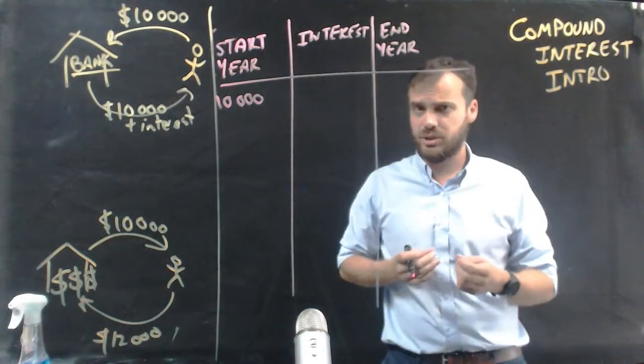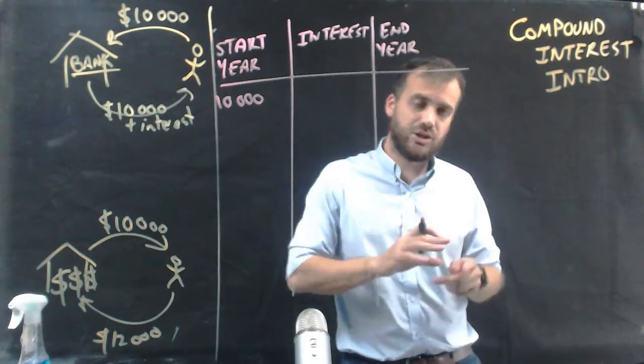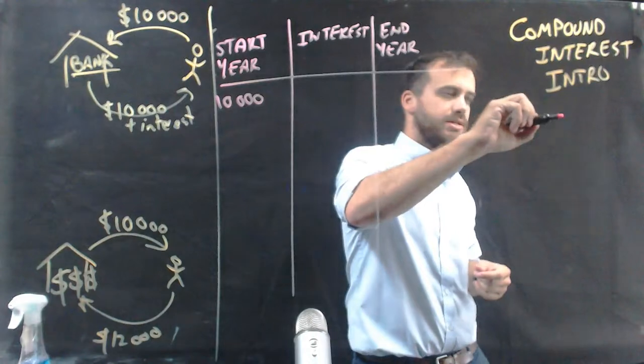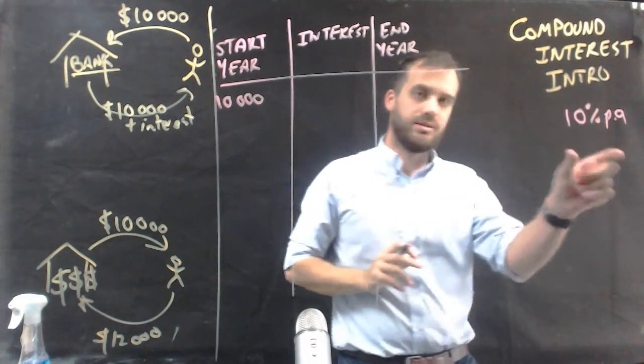Now at the moment you can't get much interest from a bank, only like 2 or 3%. But let's imagine for the sake of ease that the bank is paying you 10% per year interest.